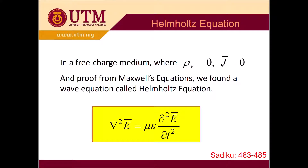To model the EM wave, we use what we call the Helmholtz equations. You can find these in the book on pages 483 to 485 for more detail. The equation is basically the Laplacian: the Laplacian of E equals mu-epsilon times del-squared E divided by del-t-squared. This means we have both the magnetic and electric parts.